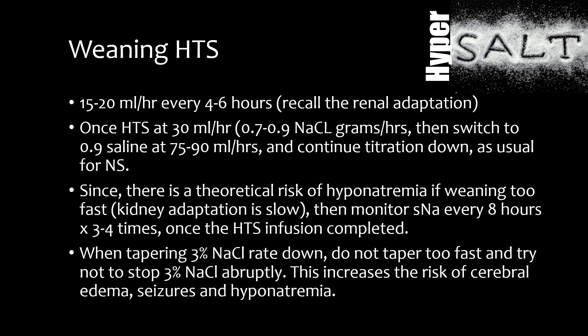To wean the hypertonic saline infusion, go slow — such as 15 to 20 milliliters per hour every four to six hours. Recall the renal adaptation. Once at 30 milliliters per hour — that is 0.7 to 0.9 grams of salt — transition to 0.9% saline at 75 to 90 milliliters per hour, and continue titrating down as usual for normal saline.